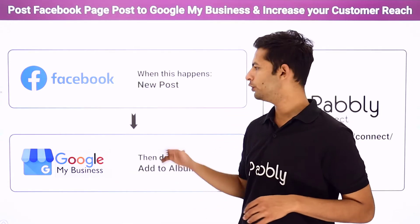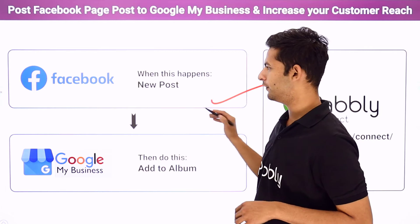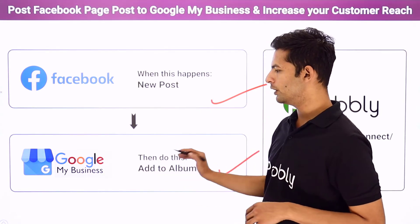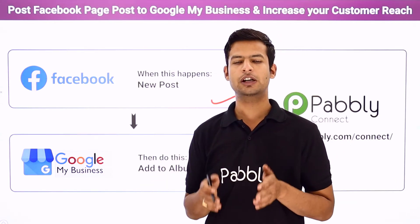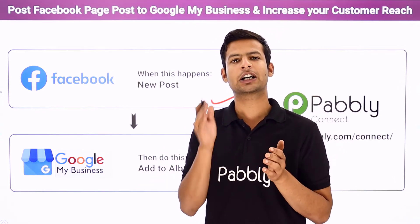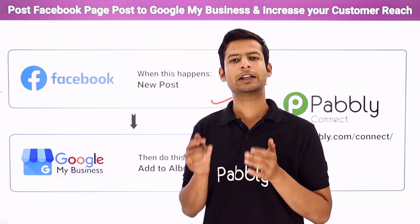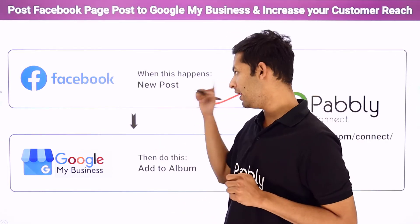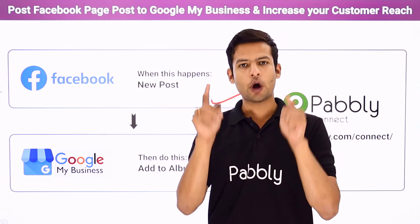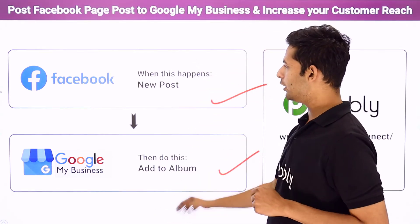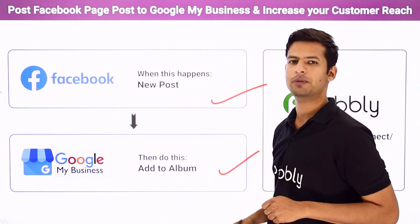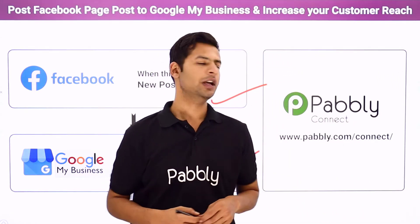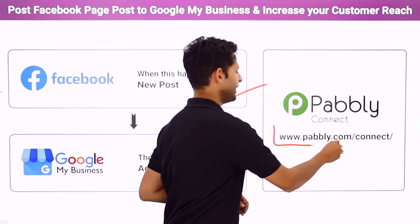For that I have used two applications here. First, Facebook — this is a social media platform — and secondly, Google My Business, a tool provided by Google which helps you to mark your presence across the Google world, including Search and Maps. But here I face one problem: there is no direct link or integration between these two applications. So how have I performed the automation? Let me tell you — with the help of Pabbly Connect.